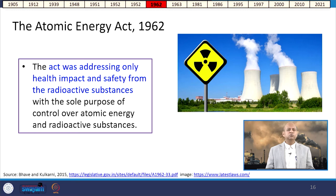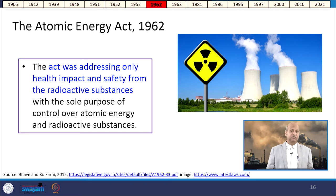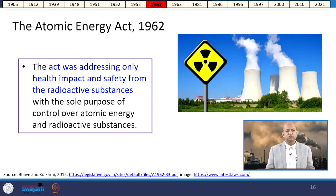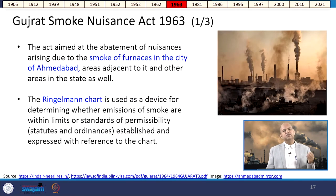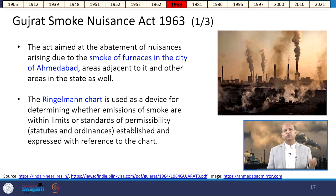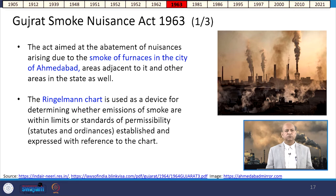In 1962, the Atomic Energy Act was enacted, addressing health impacts and safety from radioactive substances, focusing on control over atomic energy and radioactive substances which can be hazardous and toxic. Then in 1963, the Gujarat Smoke Nuisance Act was enacted, aimed at the abatement of nuisance arising from smoke from furnaces in the city of Ahmedabad and adjacent areas of Gujarat.